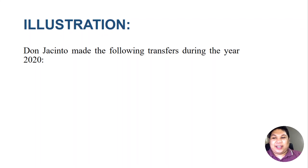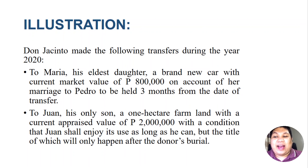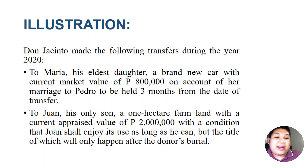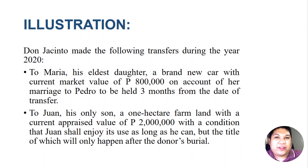Dona Cinto made the following transfers during the year 2020. First, to Maria, his eldest daughter, a brand new car with a current market value of 800,000 pesos, on account of her marriage to Pedro, to be held three months from the date of transfer. Next, to Juan, his only son, a one-hectare farmland with a current appraised value of 2,000,000 pesos, with a condition that Juan shall enjoy its use as long as he can, but the title will only transfer after the donor's burial. Dona Cinto in 2020 is still alive and made these two transfers. Let us analyze which is a donation inter vivos and which is a donation mortis causa.